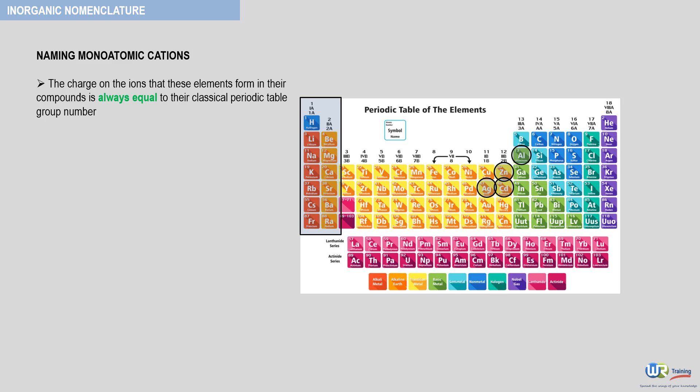So in the case of aluminum, it is present in group 3A, which means that the cation will be Al3+. Zinc is present in group 2B. Therefore, the cation for zinc would be Zn2+.